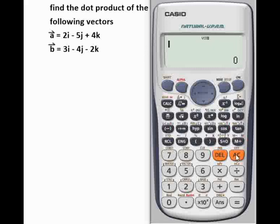Then your AC button to go back to your main menu. So to solve now, just press shift. If you look above the key number 5, you see vector there, so you press key number 5.